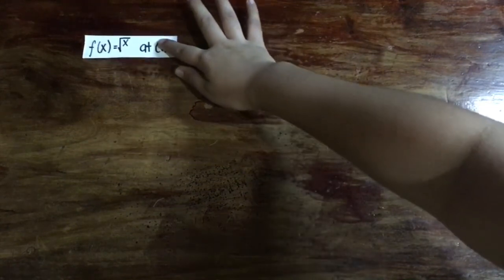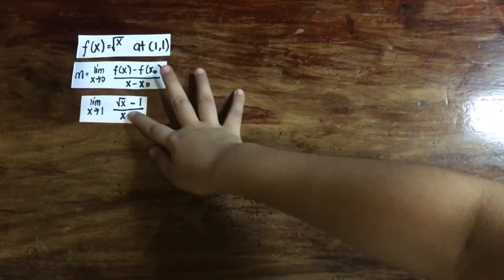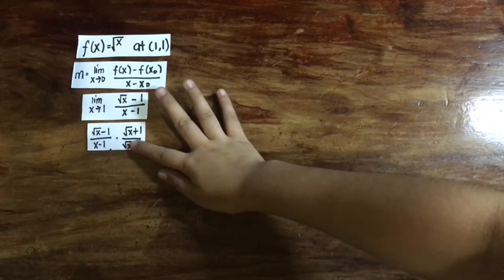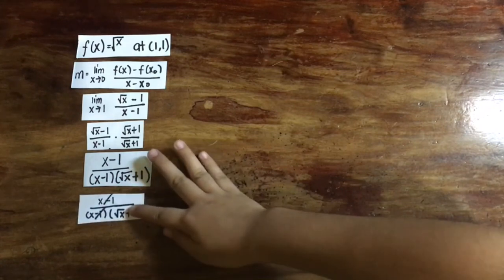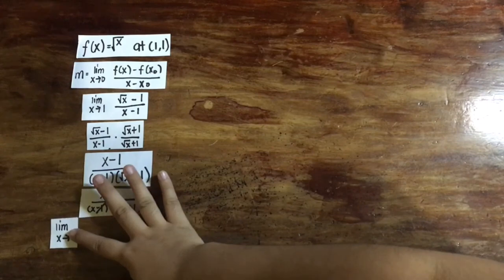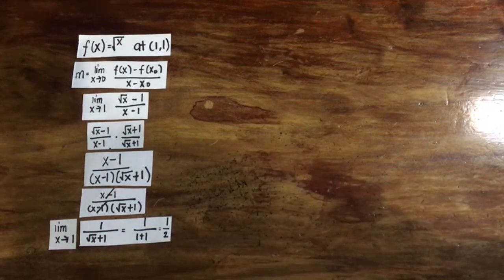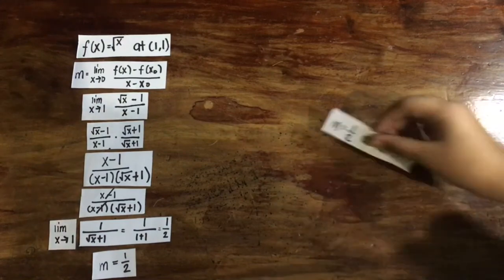Given the function square root of x at point (1, 1), we substitute the value into the slope of a line equation, getting the limit as x approaches 1 of square root of x minus 1 over x minus 1. By conjugating, we multiply by square root of x plus 1, obtaining x minus 1 over x minus 1 times square root of x plus 1. After canceling like terms, we get 1 over square root of x plus 1, and substituting x equals 1 gives us 1 half.